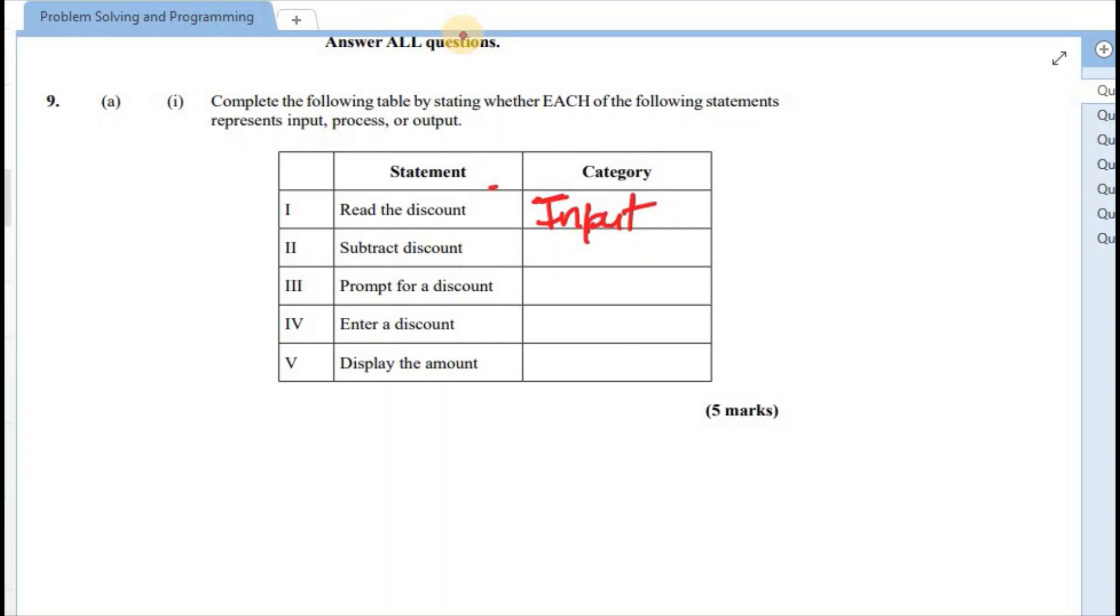Subtract discount means that some form of processing calculation is taking place, so this would have been a process. Alright, prompt for a discount means that a message will be displayed on screen, and message being displayed on screen meant that this would have been an output. Alright, enter a discount - again, enter is similar to input. And finally, display the amount. So display is also presenting some information on screen, and this would have been an output.